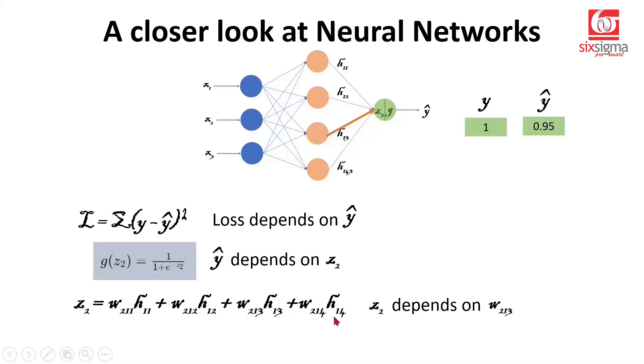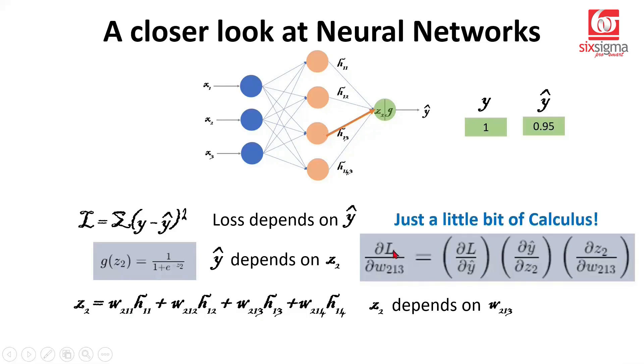Now we can write an expression known as the chain rule. We want to find out how the loss gets affected by changing w213, and it can be written in these three parts in the same sequence: loss depends on y-hat (dL/dy-hat), y-hat depends on z2 (dy-hat/dz2), and z2 depends on w213 (dz2/dW213). This is called a chain rule because if you put these three together, you get dL/dW213. They show that the terms cancel and you get dL/dW213.